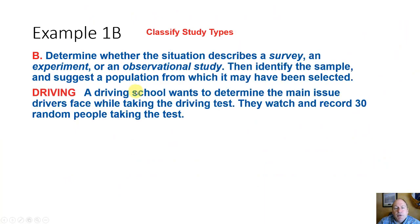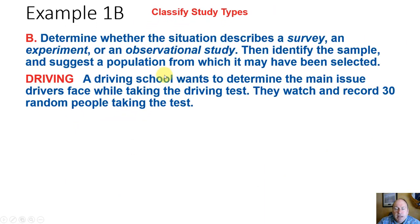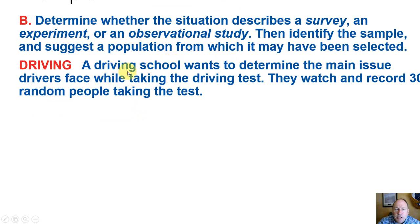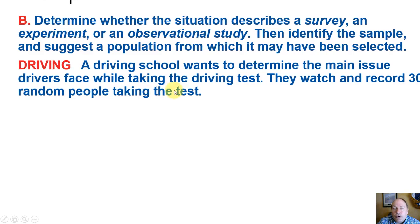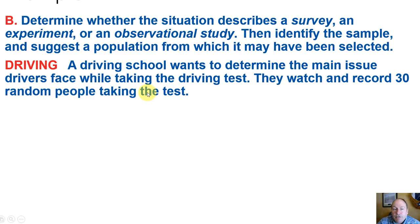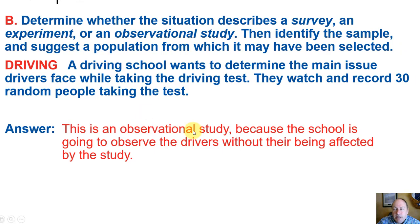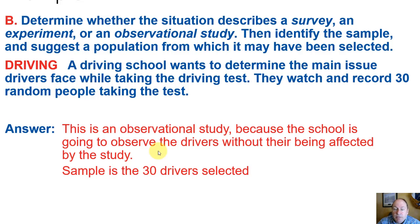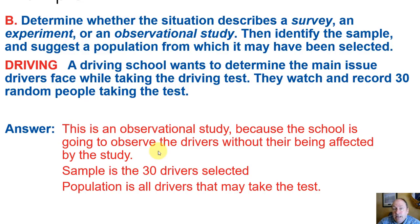Let's look at another example. A driving school wants to determine the main issue drivers face while taking the driving test. They watch and record 30 random people taking the test. This is an observational study because we're just watching people taking the test — we're not affecting them. The sample is the 30 drivers that have been randomly selected, and the population is all the drivers that might take the test.